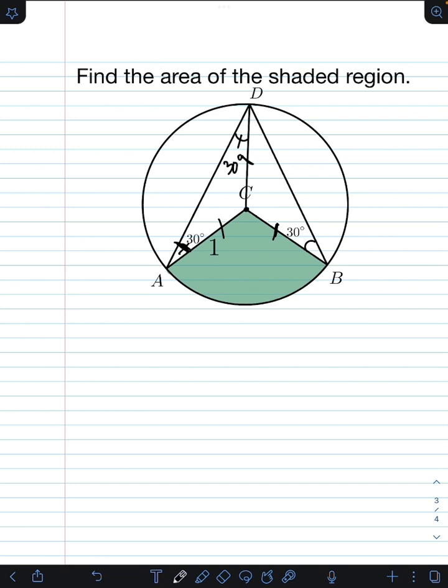Likewise, for triangle DCB, the base angle CDB is congruent to angle CBD. And since CBD is 30 degrees, CDB is also 30 degrees.